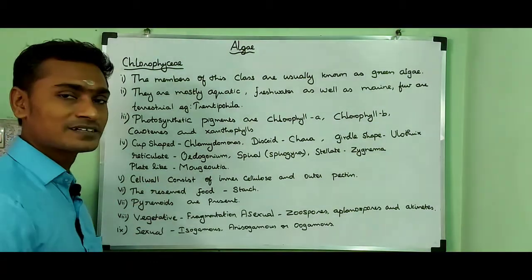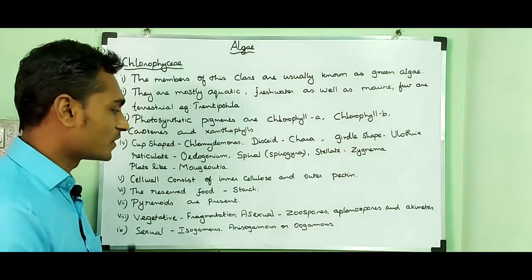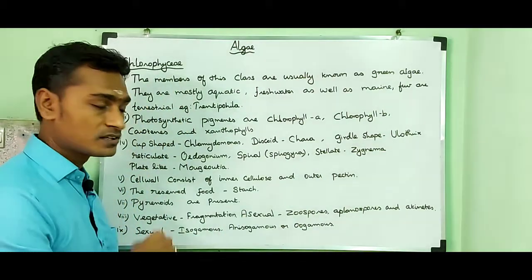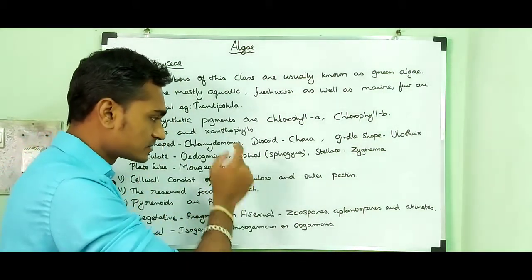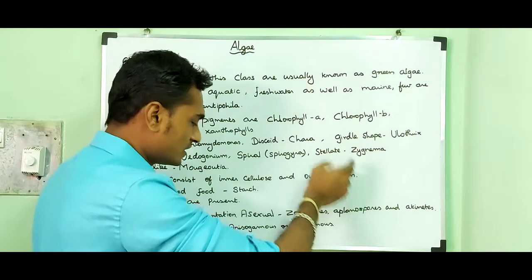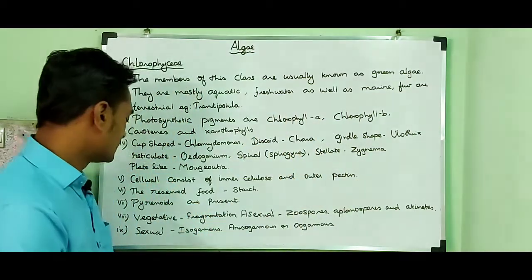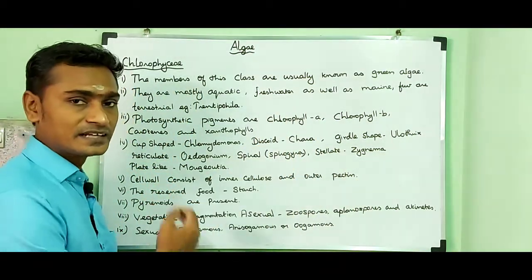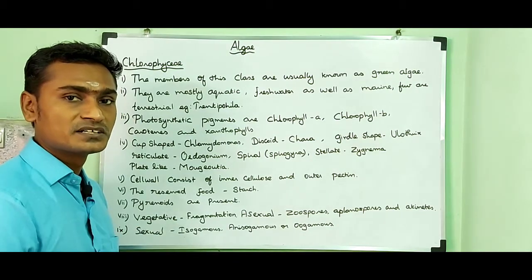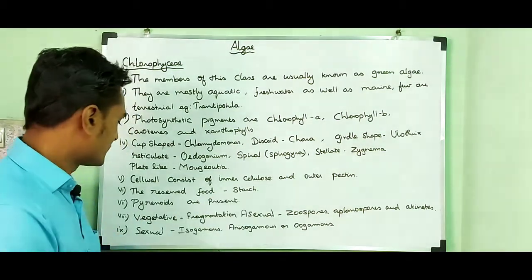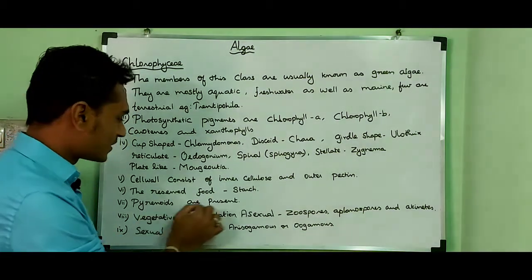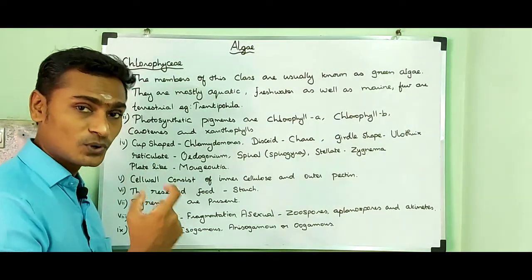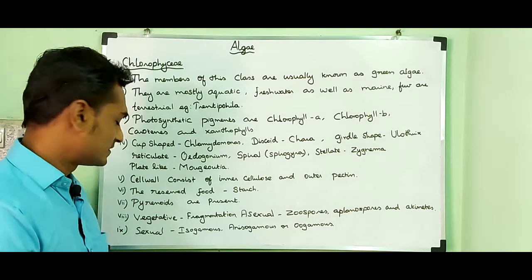The cell wall is made up of an inner cellulose layer and an outer pectin layer. The reserve food material is starch — the algae can store reserve food material as starch. Pyrenoids are present; it is a proteinaceous structure which can store starch food material.